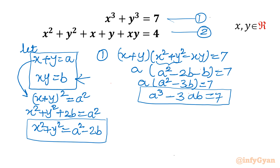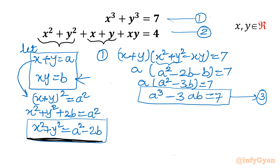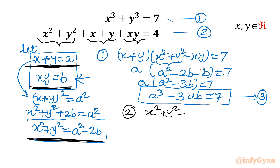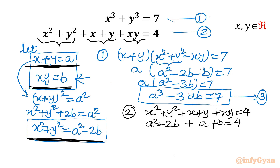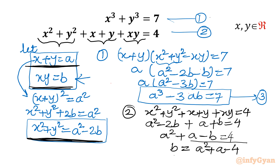Let me call this equation 3. Now for equation 2, substituting x² + y² = a² − 2b, x + y = a, and xy = b into x² + y² + x + y + xy = 4, we get a² − 2b + a + b = 4, which simplifies to a² + a − b = 4. So b = a² + a − 4. Let me call this equation 4.